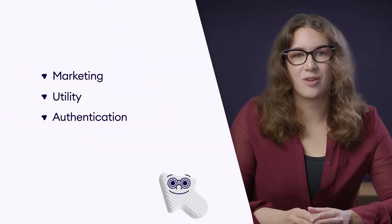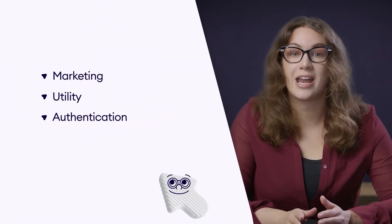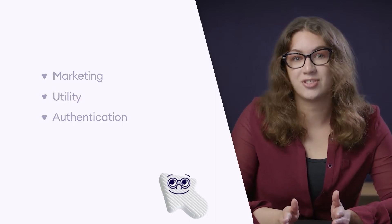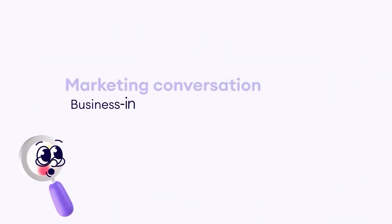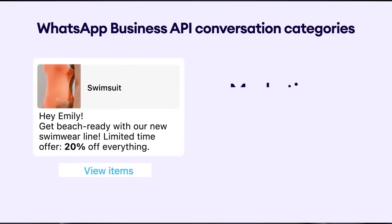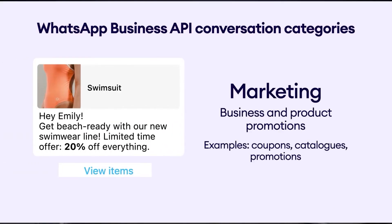Business-initiated conversations fall into three categories: marketing, utility, and authentication, and they have different pricing. WhatsApp defines marketing conversations as business-initiated conversations to market a product or service to customers, such as relevant offers to customers who have opted in. The way to start a marketing conversation is by sending your customer a message about a limited-time offer, which sparks their interest and can potentially lead to a response or purchase.